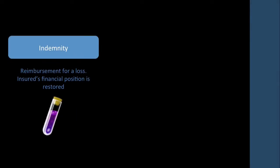With liability, there's this concept known as indemnity. Indemnity is the reimbursement for a loss, and the whole concept is that the insured's financial position is restored. So if your car gets crashed and your car is worth 200 grand, they pay you 200 grand. Obviously this doesn't work with life insurance — when your husband dies, they don't come and give you an identical husband. So this is very specific to general insurance, not life.